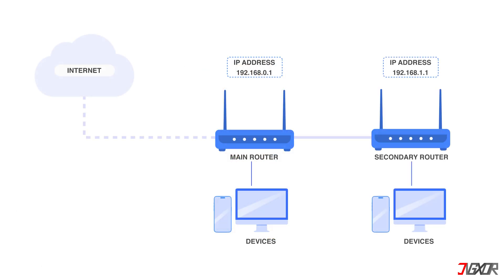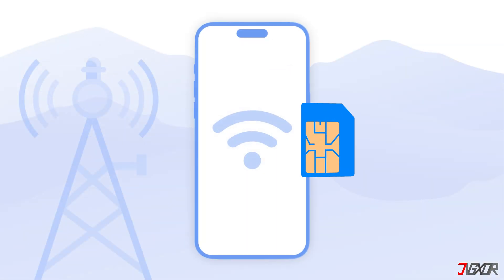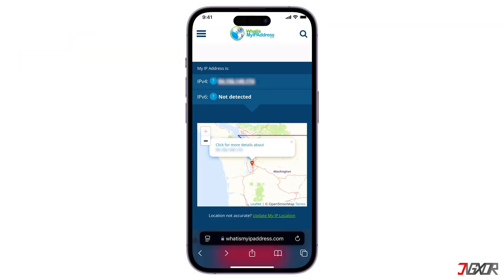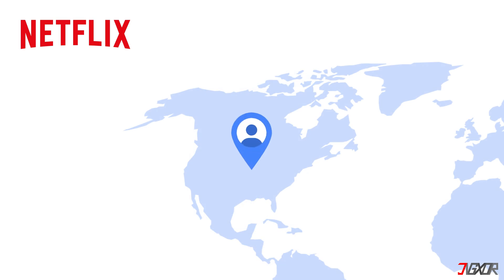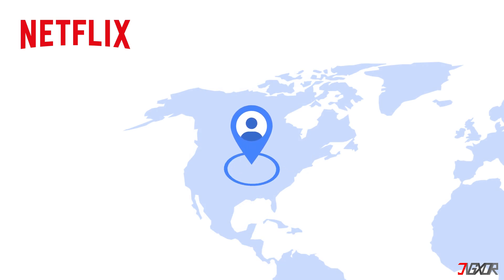Every router connected to the internet has a unique global IP address — think of it as your digital address. For smartphones, every SIM card has its own unique IP address. Your IP address is usually tied to your physical location. This tells Netflix where you are, and they use that to limit what you can watch. It's not very detailed, but Netflix can tell which city you live in.